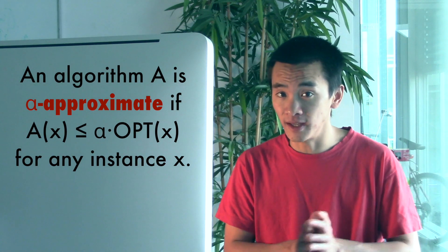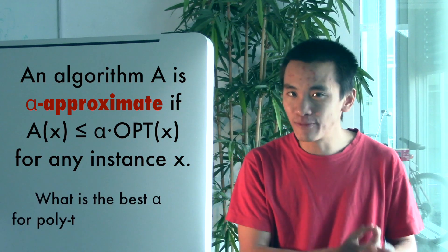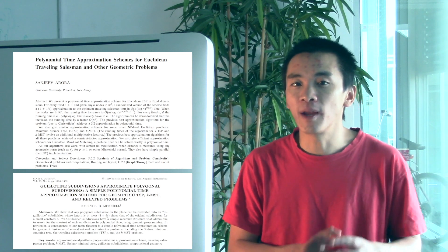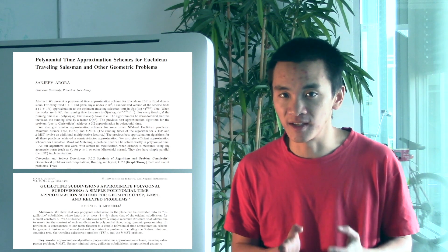The fundamental question then is what's the best possible value of alpha for polynomial time algorithms? There is the special Euclidean case, where cities are located on a two-dimensional plane and distances between cities are the usual Euclidean distance, and where the problem can be approximated to arbitrary precision in polynomial time. Indeed, in the late 90s, Arora and Mitchell independently proved that for any positive epsilon, there is a polynomial time algorithm with an approximation ratio of 1 plus epsilon. This discovery won the 2010 Gödel Prize.